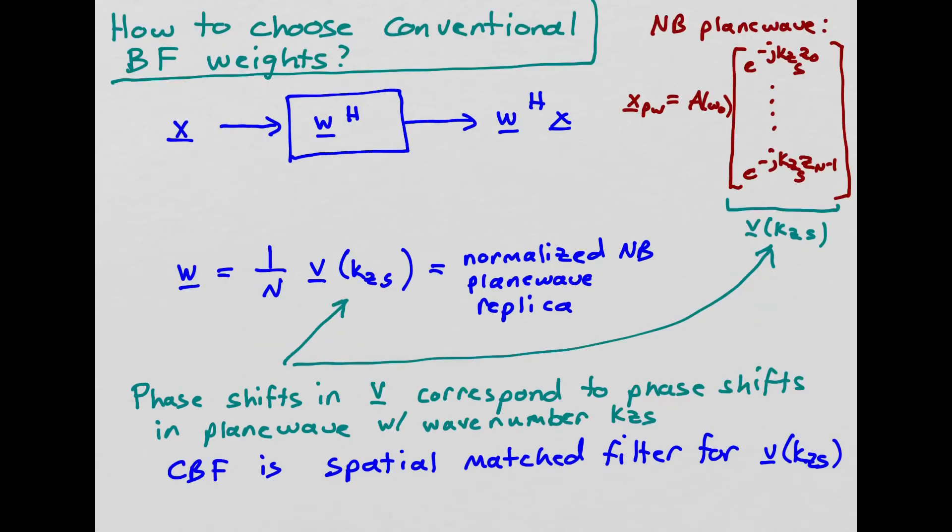So how do we choose weights for our conventional beamformer? Well remember, we're looking for narrowband plane wave signals. So the measurement vector that I would observe for a single narrowband plane wave could be written as this common complex amplitude, A of omega zero, that's common to all of the sensors. And then the difference between each sensor is just a phase shift. And that phase shift is a function of where the sensor is along the array. And this vector here of phase shifts is a complex exponential vector that we define as the narrowband plane wave replica vector.